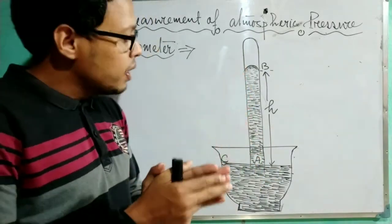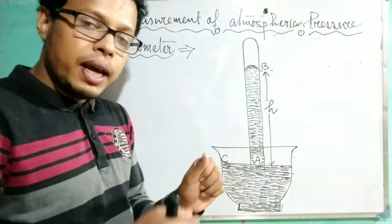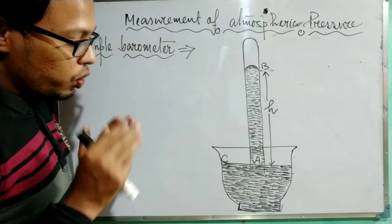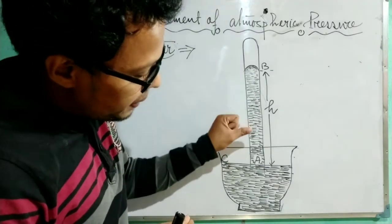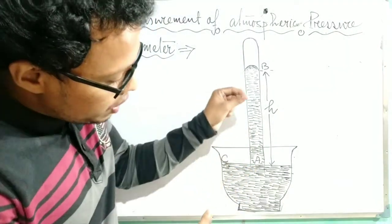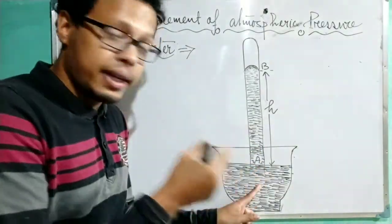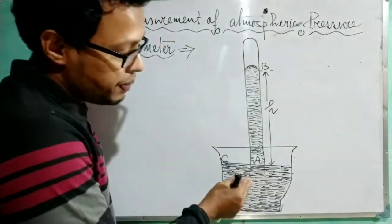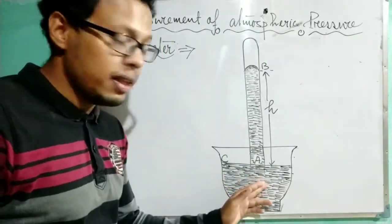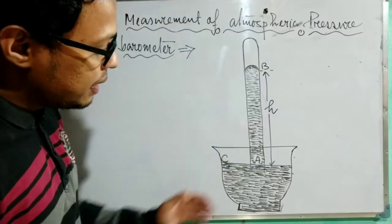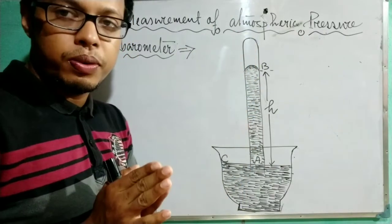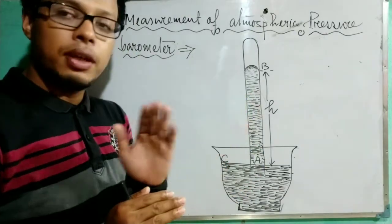After the tube is completely filled with mercury and the open end is closed by the thumb, it is inverted into the trough of mercury such that the open end is well immersed inside the trough filled with mercury. After that, the thumb is removed carefully, making sure that no air is present inside the glass tube. That is all about the construction of the simple barometer.